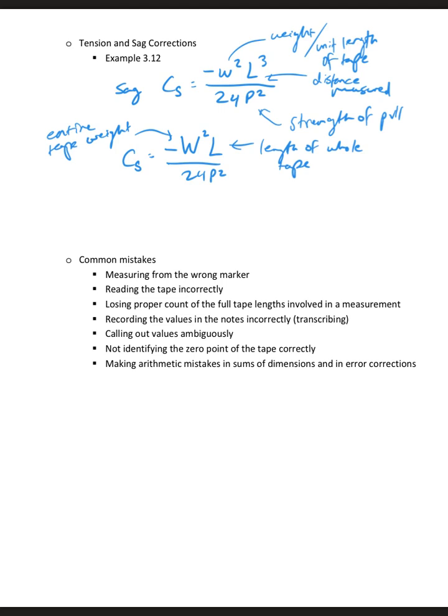Then you have the tension correction. We call this one C sub P, correction for the pull, and this is P minus P sub S times L over A times E. P here is the strength of pull. P sub S is the standard tension. So if I'm pulling at the standard tension, then this correction goes away, it goes to zero.